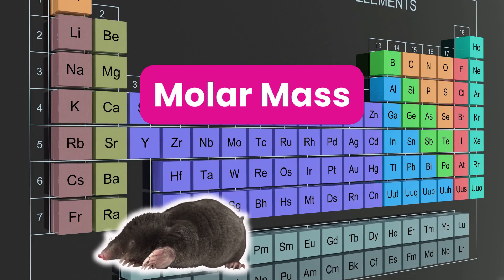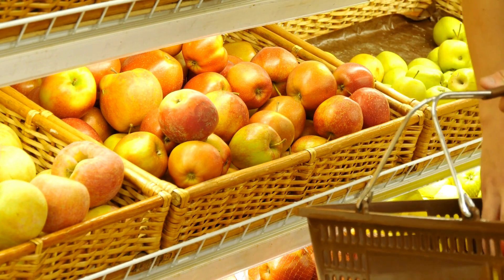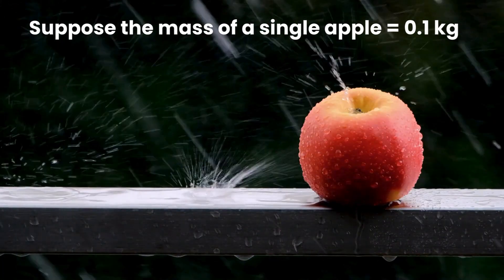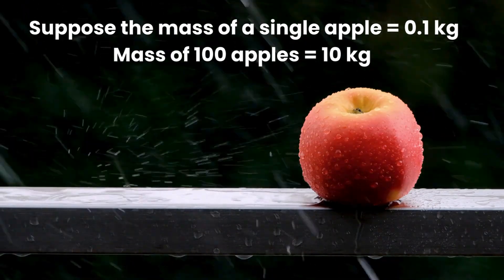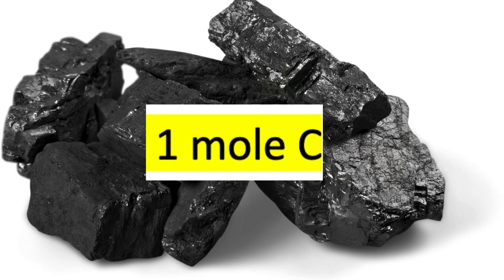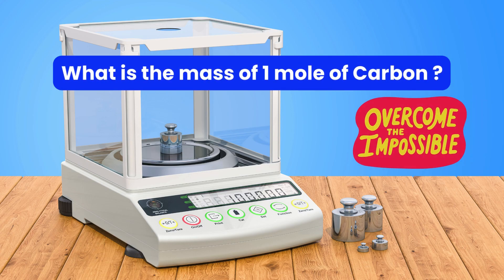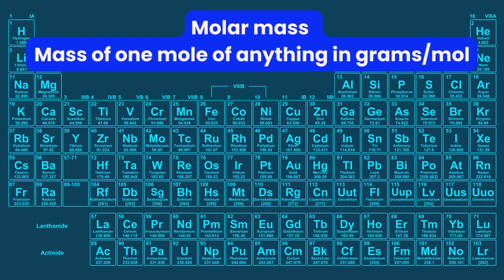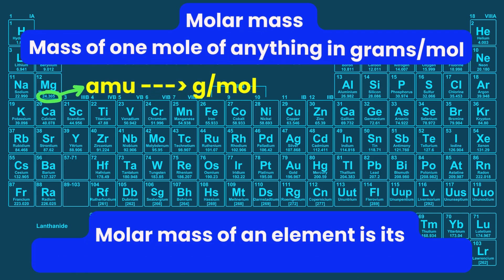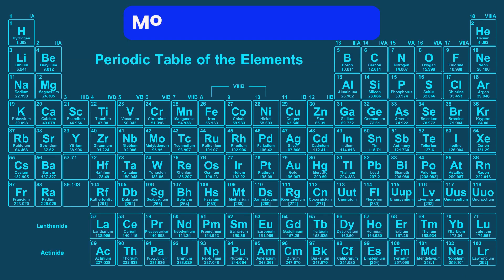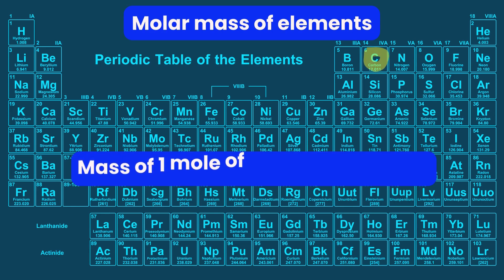Molar mass: if we have to buy 100 apples, there must be an efficient way rather than counting 100 apples in the grocery store. Suppose the mass of a single apple is 0.1 kg — we can measure out 10 kg of apples, which is the mass of 100 apples. Similarly in chemistry, if we need one mole of carbon for an experiment, it is impossible to count out 6.02 times 10 to the 23 atoms of carbon. Instead we need to know the mass of one mole of carbon. Molar mass is the mass of one mole of anything, in grams per mole. The molar mass of an element is its atomic mass in amu written in grams per mole.